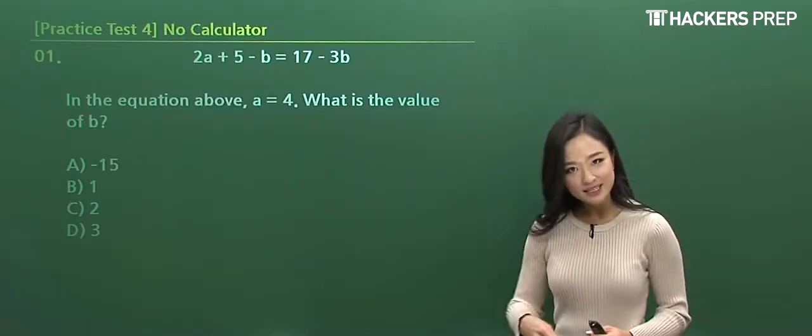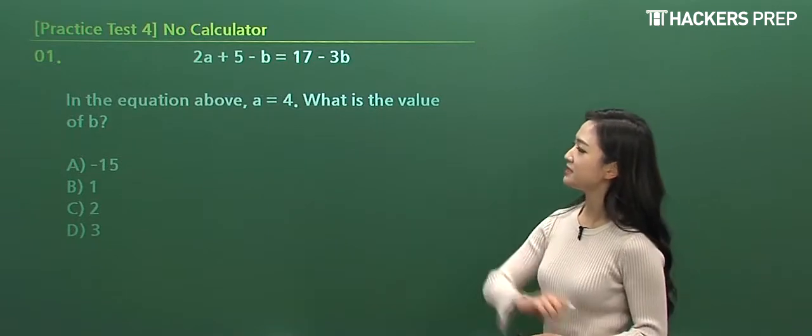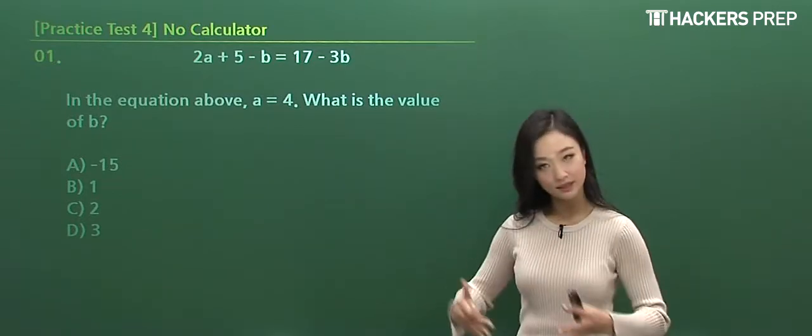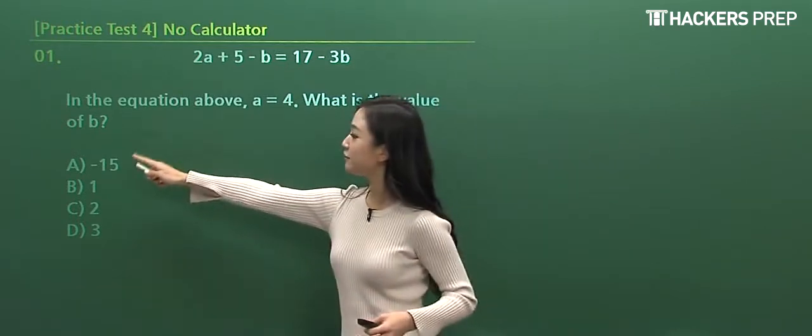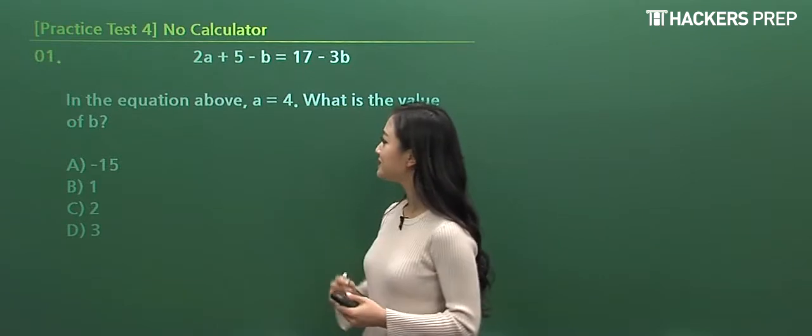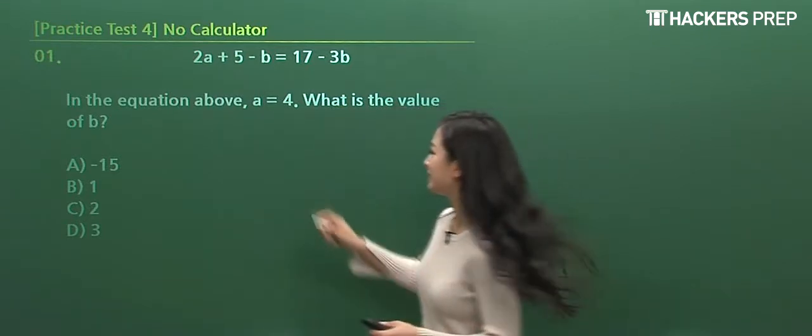For question number one, it was a nice and easy warm-up question where they present a simple algebraic expression, and the condition given was A is equal to 4, and they're asking for the value of b. What do we do here? All we have to do is substitute and simplify. Should we do it together?